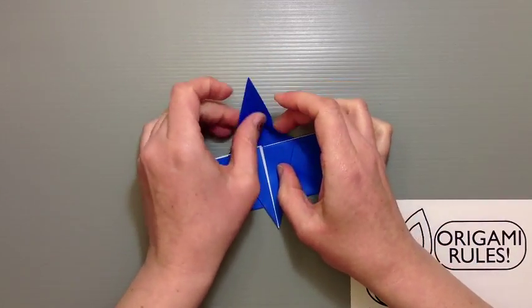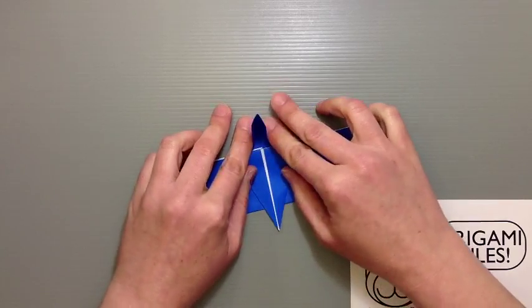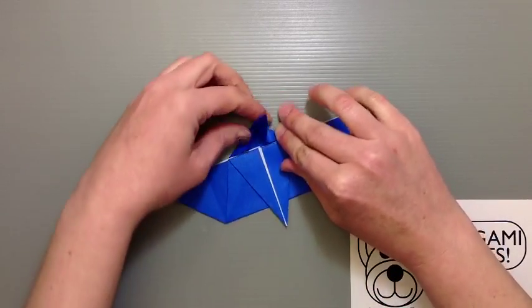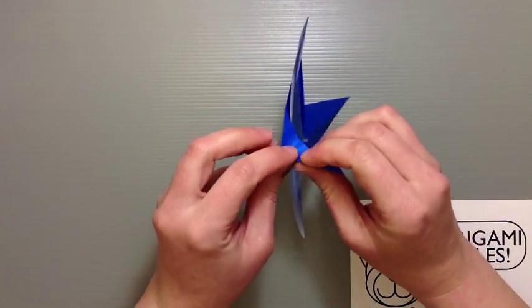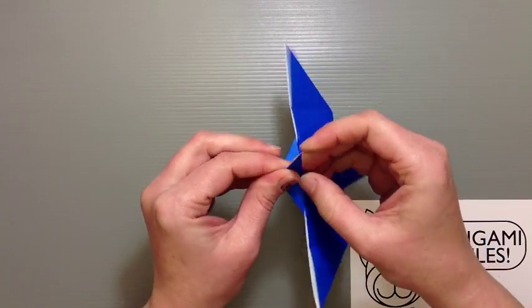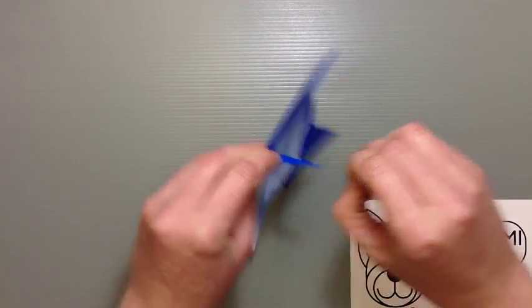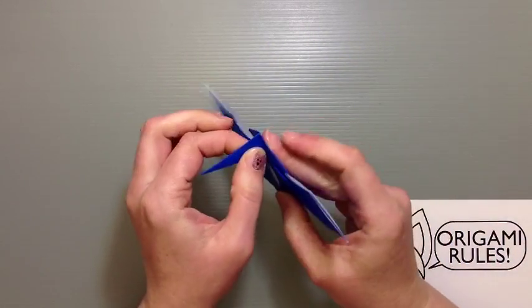And then when you bring both of those in at the same time, you should be able to create three points. The two sides and the middle here coming together to create the either bottom or top part. In this case, this is the top part of our crow's beak.